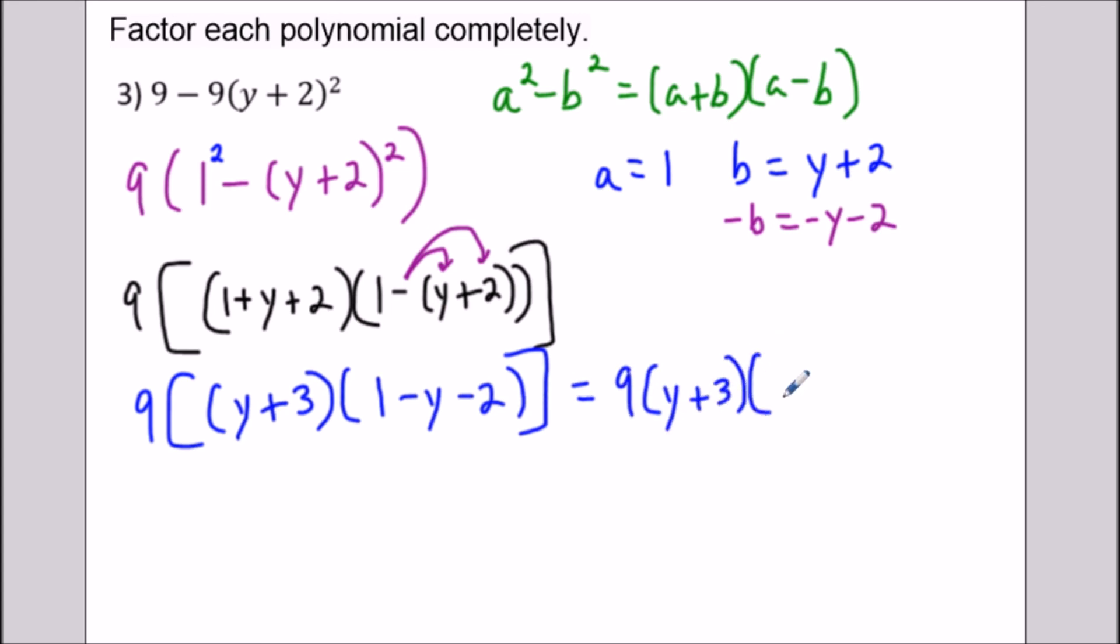Well, when we combine 1 - 2, we're going to get -1. So we have -1 and a -y. Here like this. So we could stop here, but it looks a little bit nicer if we take a negative out of this.